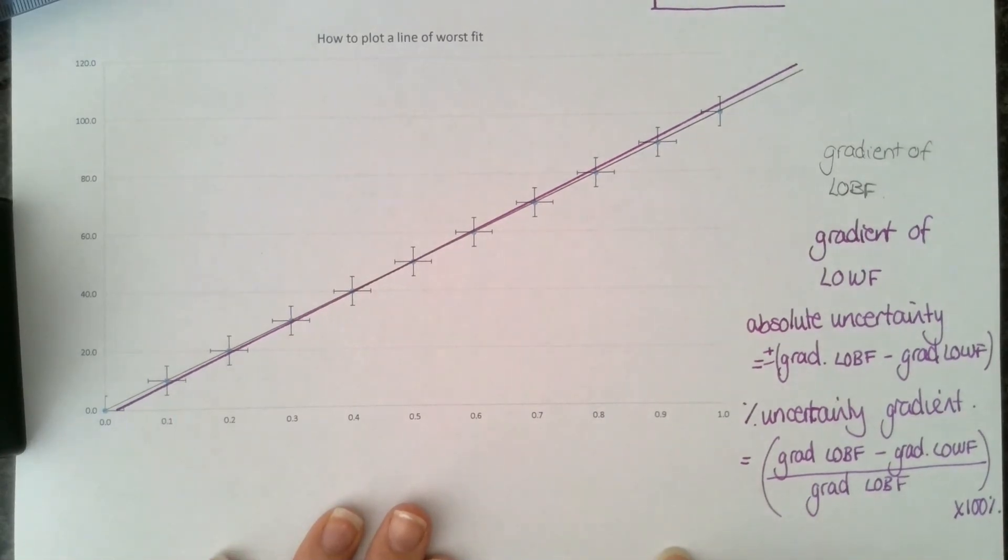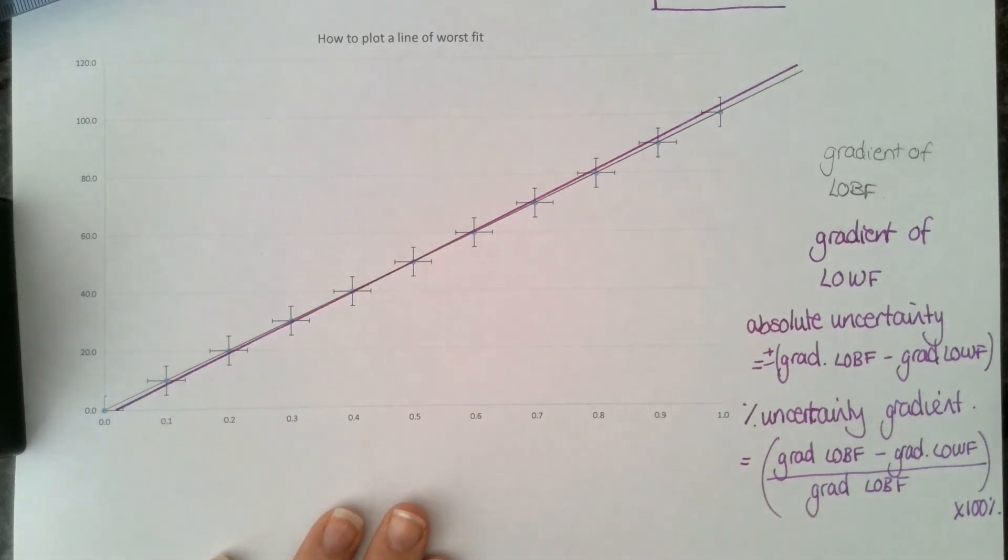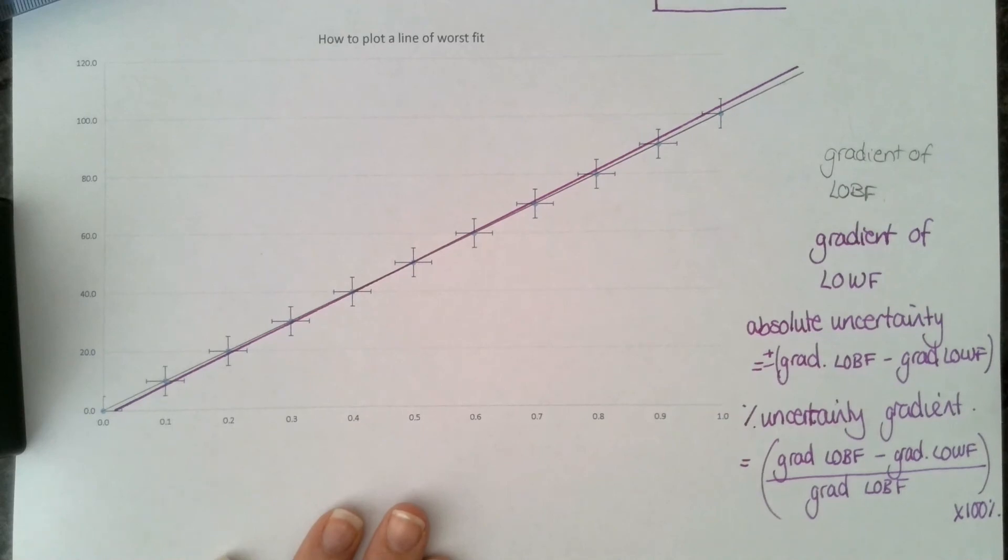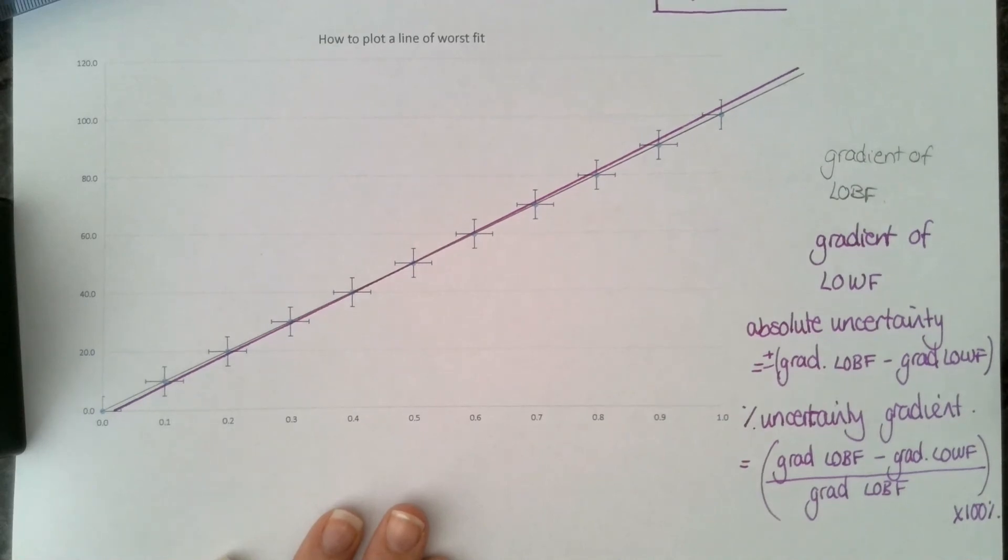Hopefully that's helped and you can now draw a line of worst fit and calculate the absolute and percentage uncertainty in your gradient.